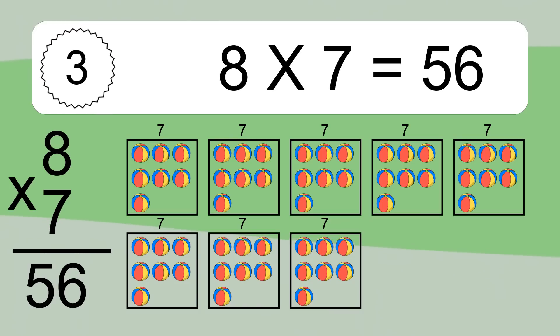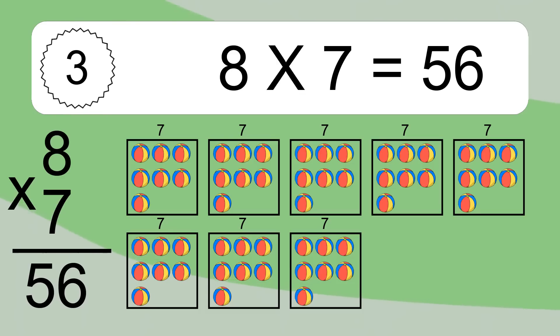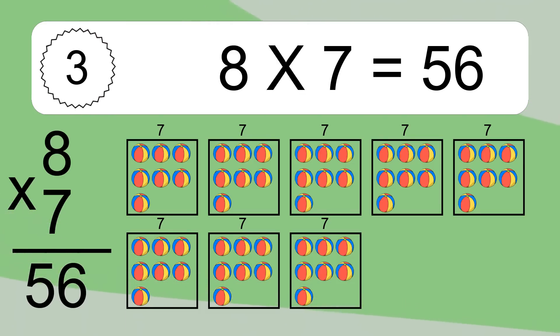We have 8 boxes and each box has 7 colorful balls inside. If you count all the balls in all the boxes together, you will have 8 times 7 balls. This equals 56 balls.